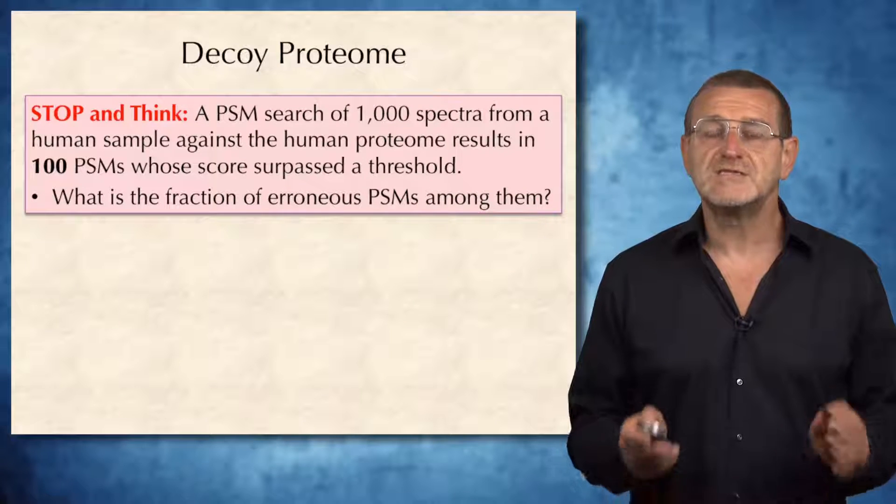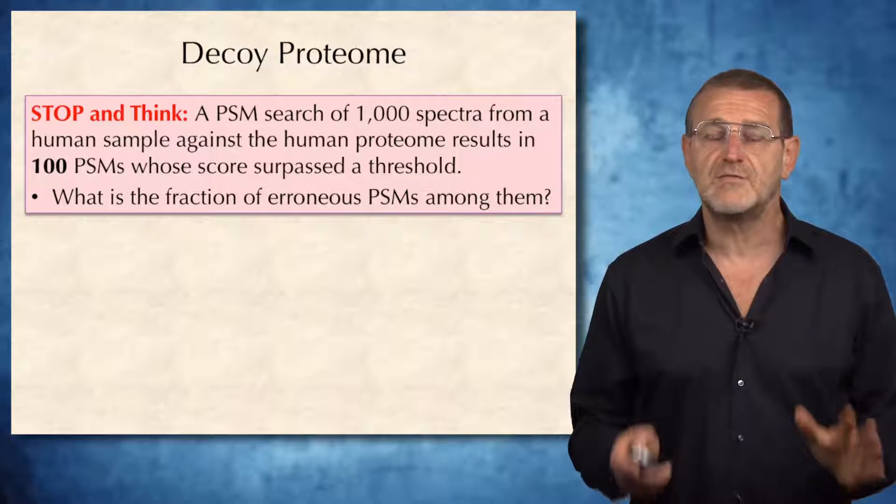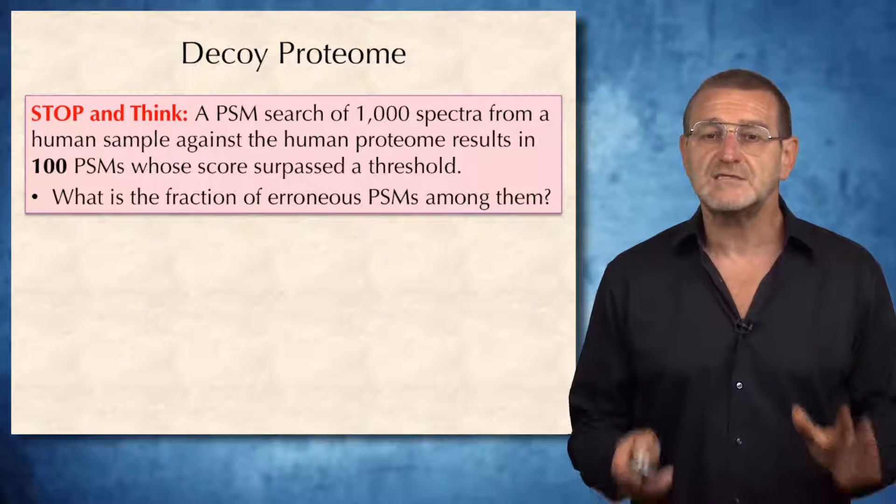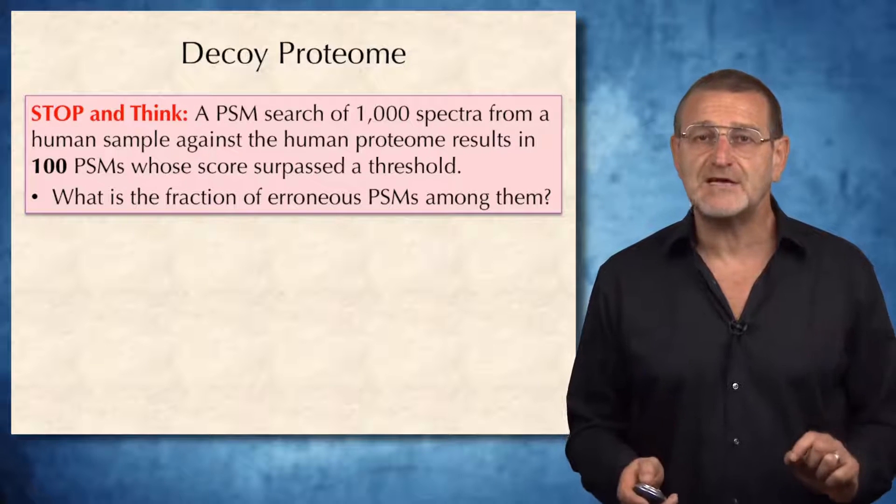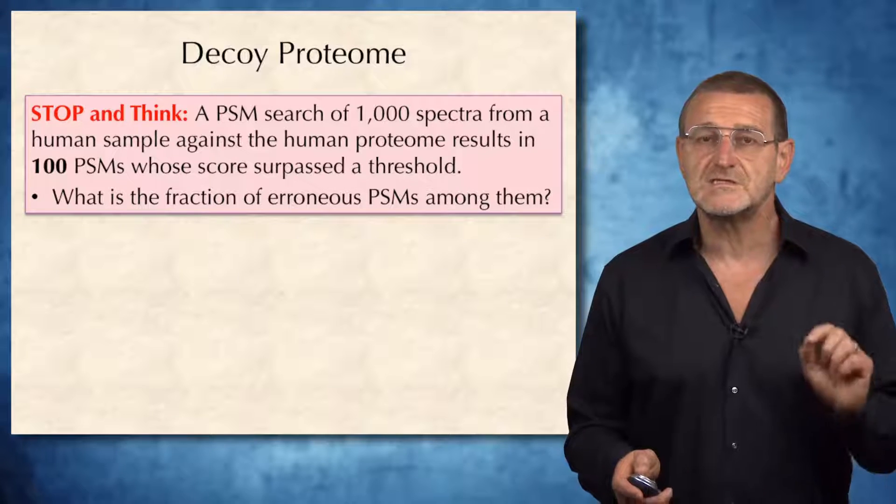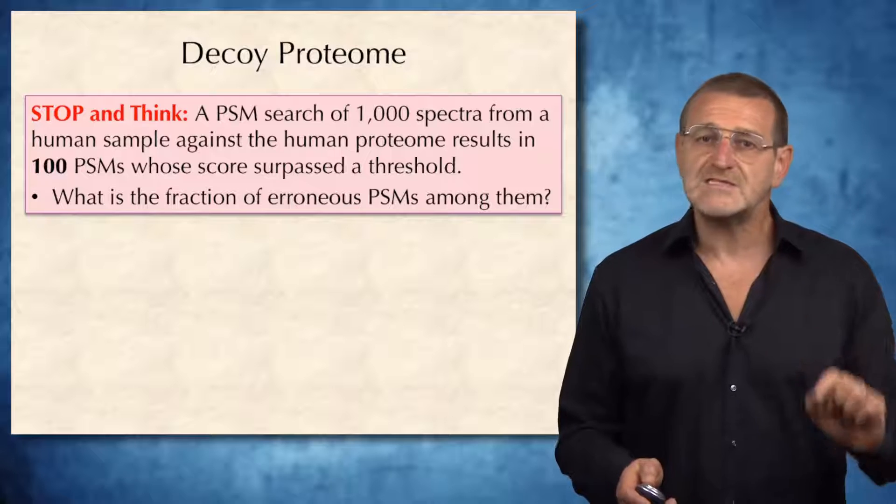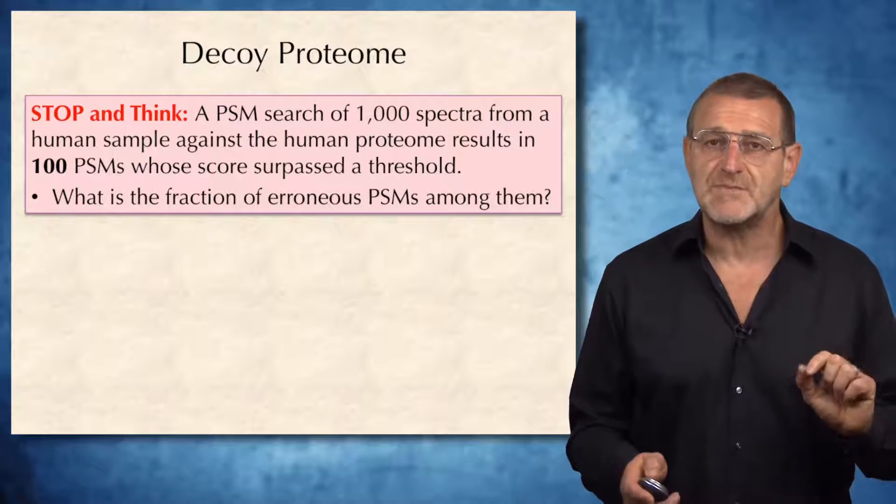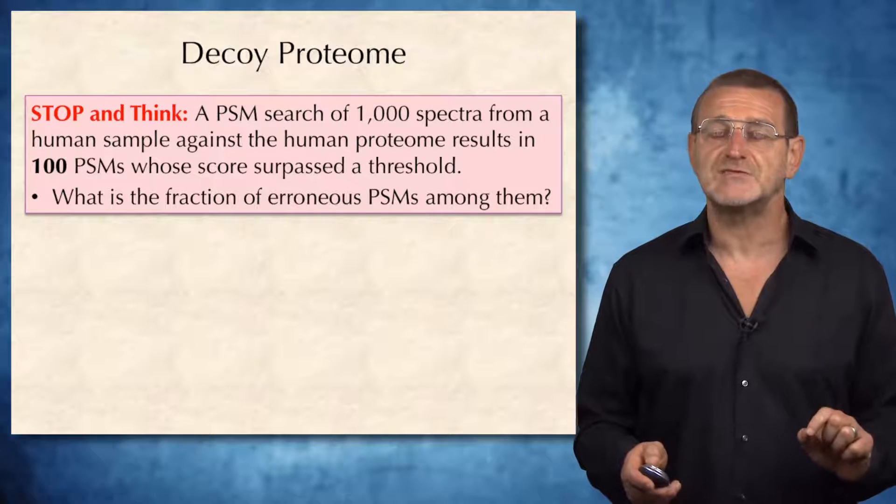Imagine that a PSM search of 1,000 spectra from a human sample against the human proteome results in 100 peptide spectrum matches, with a score exceeding a threshold. But what is the fraction of erroneous peptide spectrum matches among these 100 peptide spectrum matches?